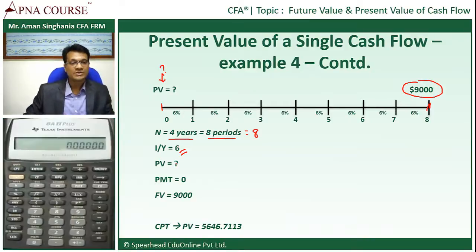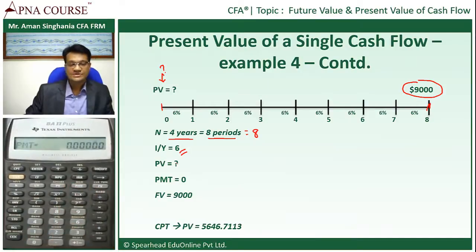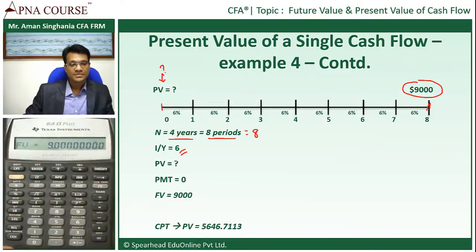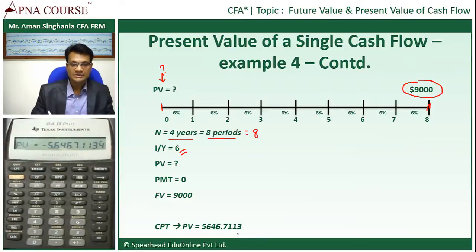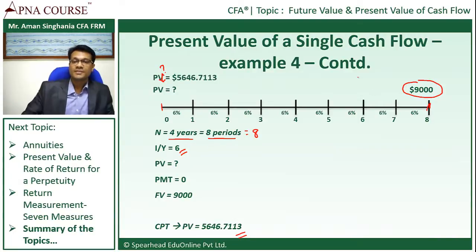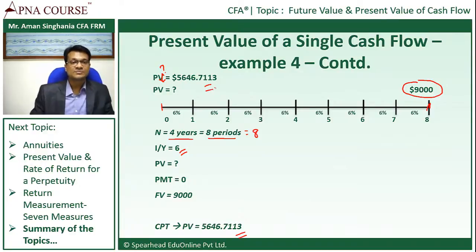I'll plug in these numbers into the calculator. N is 8, so I'll press 8 then N. I'll then press 6 and save it as I/Y. I'll skip PV because I need to calculate PV. PMT needs to be saved as 0. The future value is $9,000 — that's the amount I'm expecting after 4 years. Then I'll compute the present value. The number I'm getting on the calculator is 5,646.7113. The present value of $9,000 is $5,646.7113.